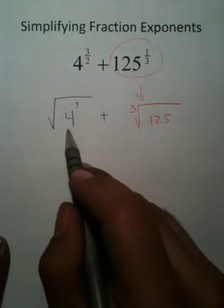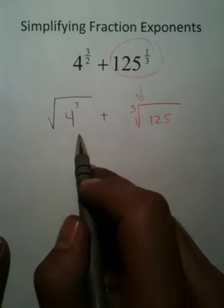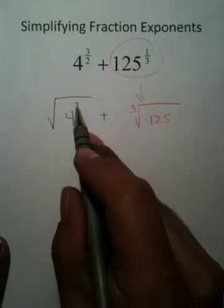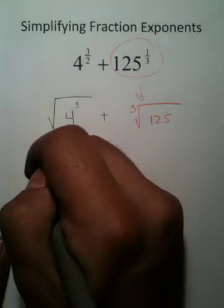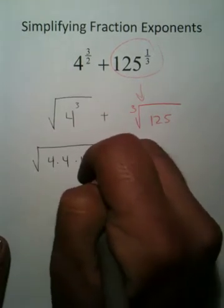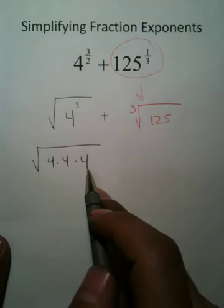Now, most people will start breaking this down into a power of 2 times 2. You're not allowed to break anything down if it has a power attached to it. You have to represent the radical as actually its expanded form, 4 times 4 times 4.